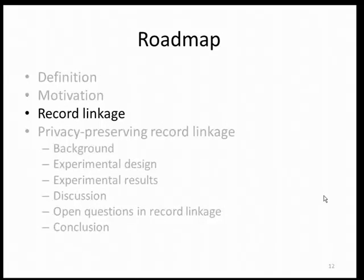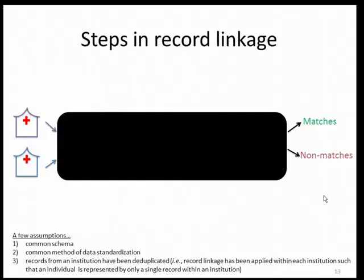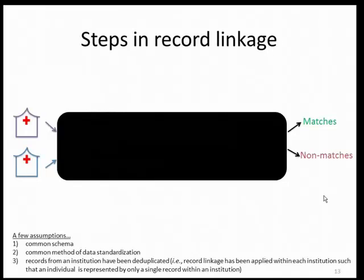Now we'll take a look at the steps involved in record linkage. Record linkage can generally be viewed as a black box where the inputs are sets of records from multiple institutions and the outputs are the set of record pairs that are matches and the set that are non-matches. Record linkage can be framed as a classification problem. I make a few assumptions: first, that the institutions sharing data have a common schema — if one hospital recorded only first and last name and the second recorded only social security number, you won't be able to do record linkage. I also assume they have enough information about individuals to be uniquely identifying, since just having a first name isn't sufficient to resolve identity.